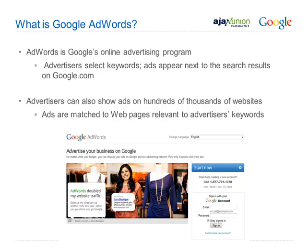Google AdWords is Google's online advertising program. Advertisers select keywords and ads appear next to the search results on Google.com. Advertisers can also show ads on hundreds of thousands of websites, where ads are matched to web pages relevant to advertiser keywords.